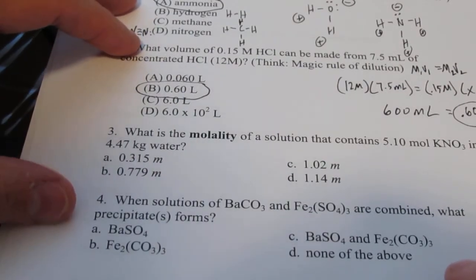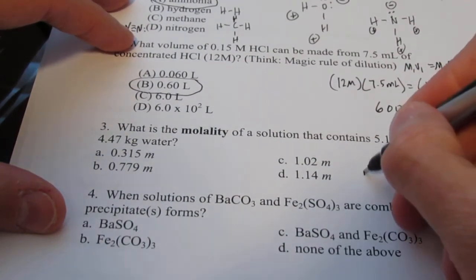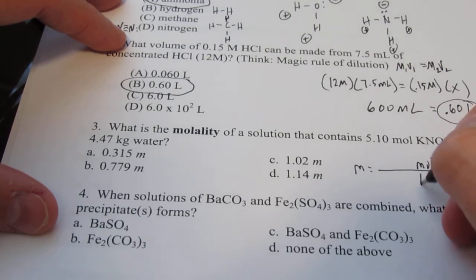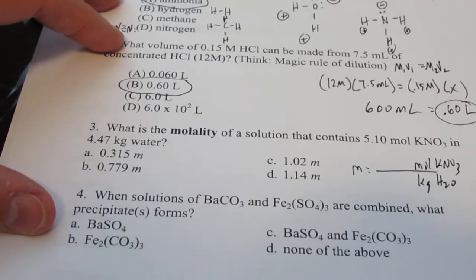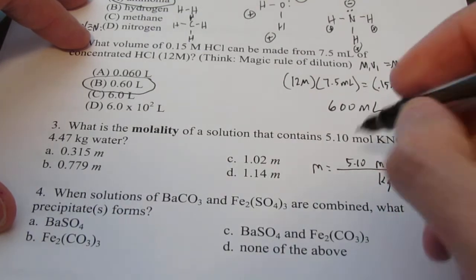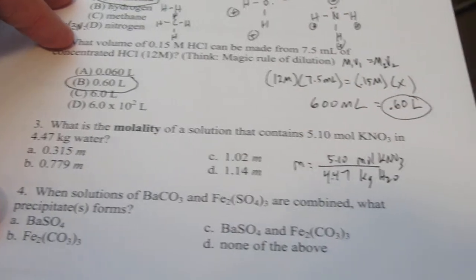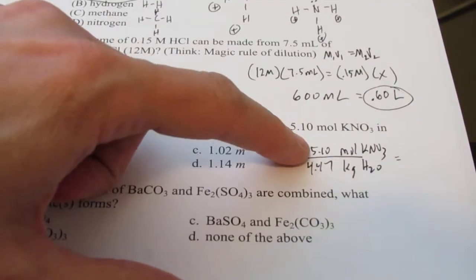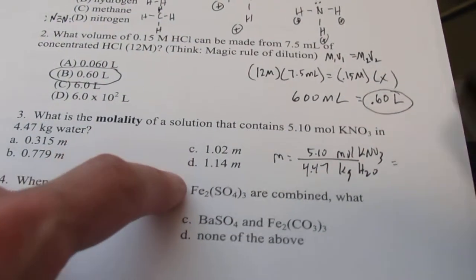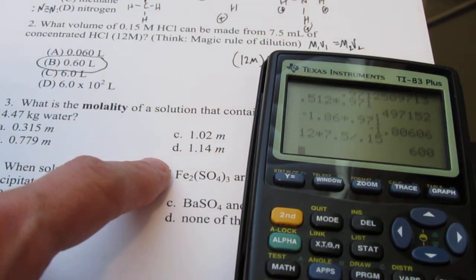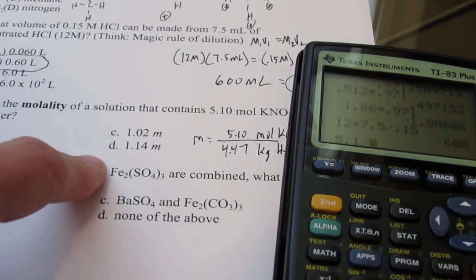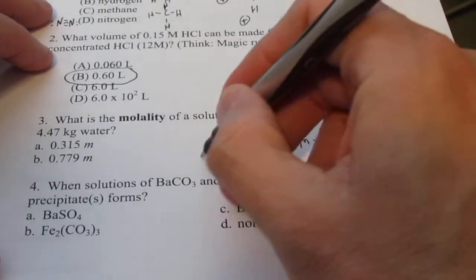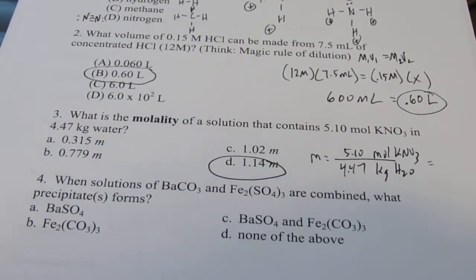Number 3: what's the molality of a solution? Molality, small letter m, equals moles of solute—in this case KNO3—divided by kilograms of solvent, in this case water. I have 5.10 moles of solute and 4.47 kilograms of water. That's pretty straightforward. My answer is going to be bigger than 1, so it's either C or D. 5.1 divided by 4.47 looks like I get 1.14 molal, so the answer is letter D. Make sure you can do simple calculations like that.